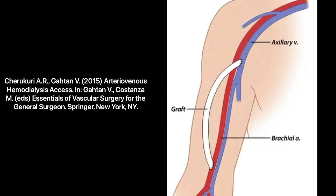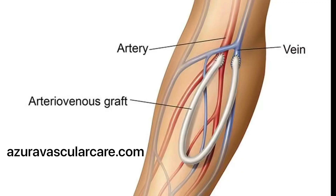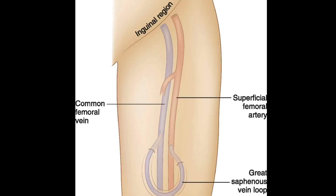The grafts can be inserted as straight tubes or looped tubes, typically connecting the radial artery to the cephalic, median cubital, or basilic vein. The loop varieties can also connect the proximal brachial artery to the axillary vein, or in the case of a lower extremity, the femoral to great saphenous vein.